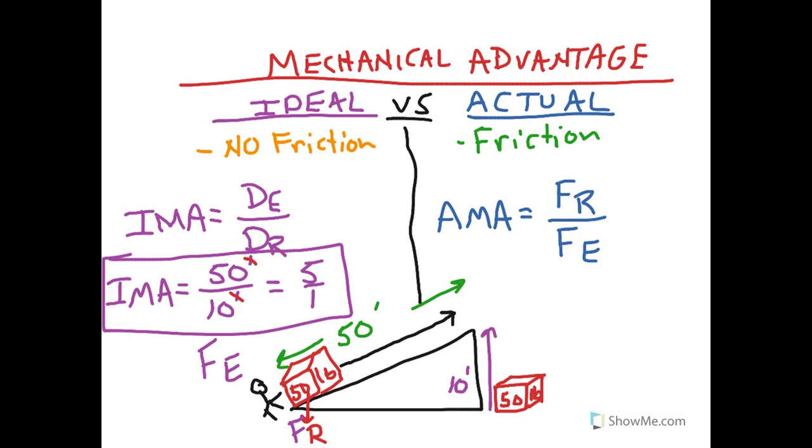But the problem is, there is friction here. So the actual mechanical advantage of this situation will be very difficult for us to figure out because we don't know how much friction there is that's going to cause him to have to move this. Let's just say theoretically that the force he has to put forth, let's say, is 12 pounds of force.